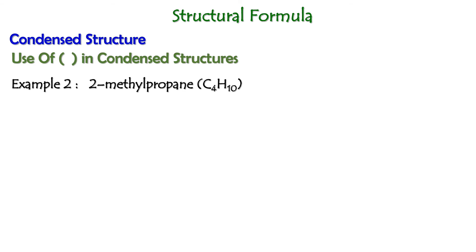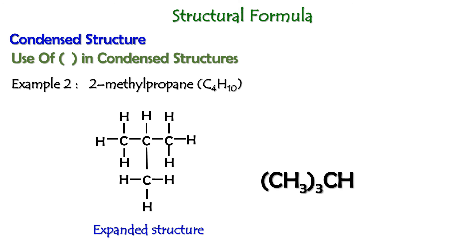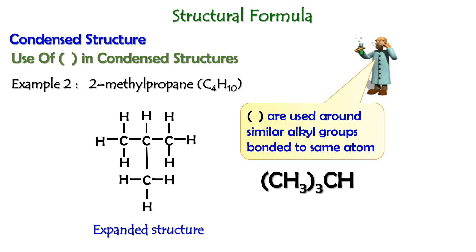The next example is 2-methylpropane, shown here as the expanded structure. The condensed structure of the molecule can be written like this, using the bracket symbol to represent the alkyl group bonded at the same carbon.